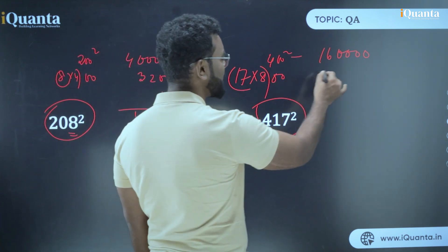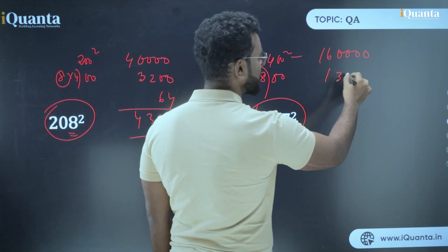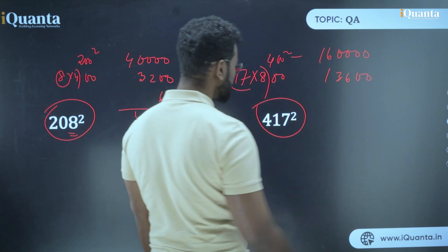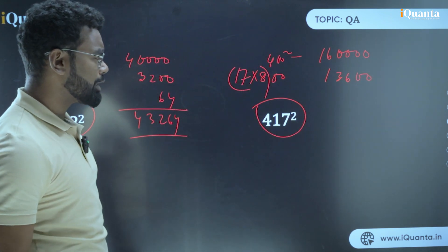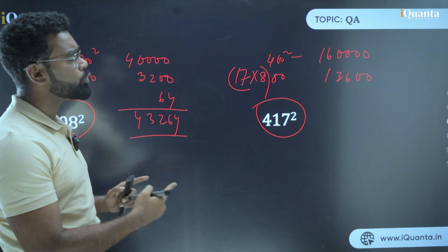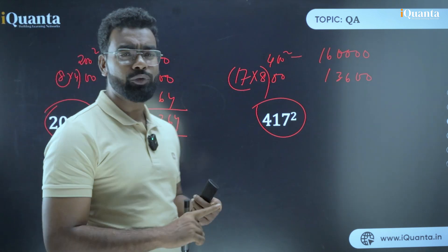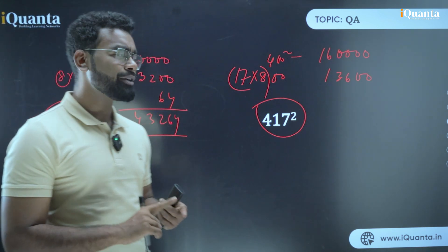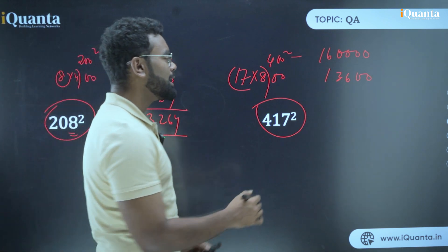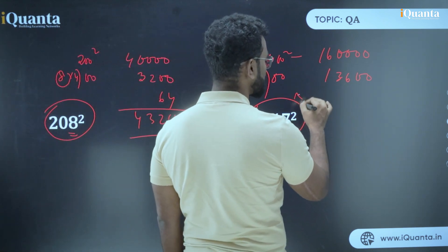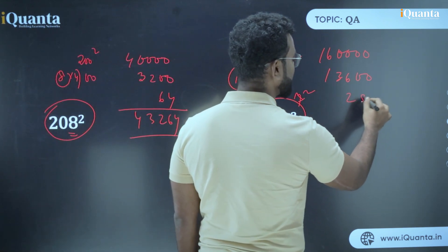Now 17 into 8 is basically - 17, 34, 51, 68, 85, 102, 119, and I guess 136. 17 into 8 is 136. So it is basically 136, and that much 100. I hope I make things clear to you - what I am doing. I am adding 17 into 8. So 17 into 8 is 136, and 13,600 I have to add. And the last is 289. What is it? 17 square last step, that is 289.